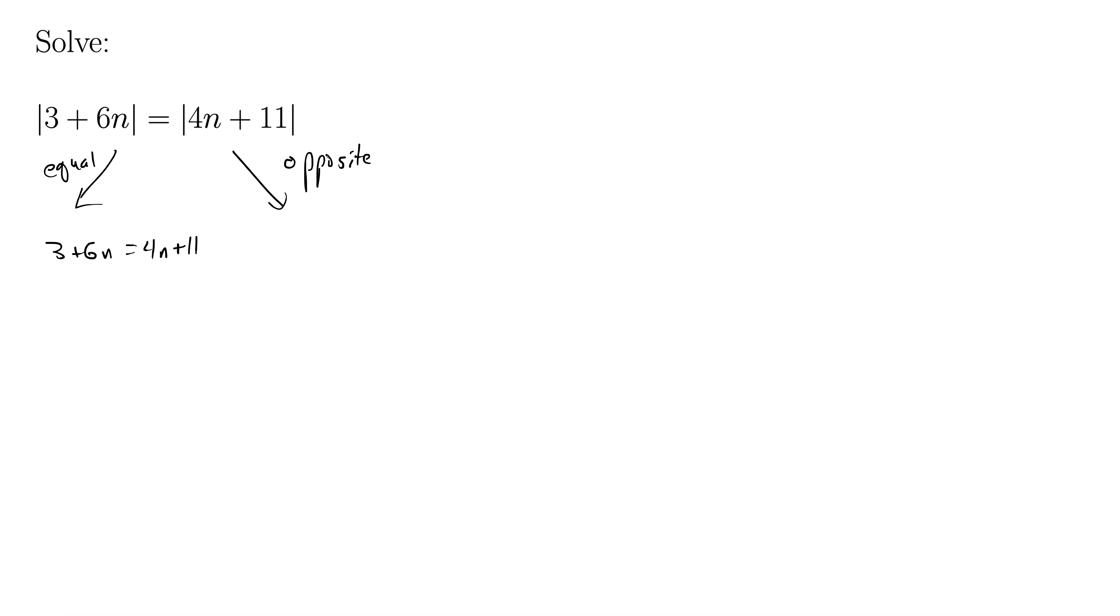The opposite equation requires one additional step. 3 plus 6n, we keep that left part the same, equals a negative parenthesis, 4n plus 11.